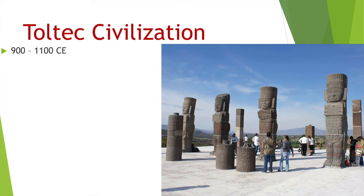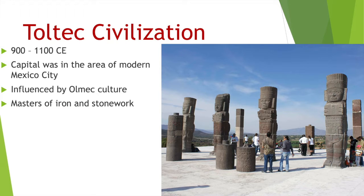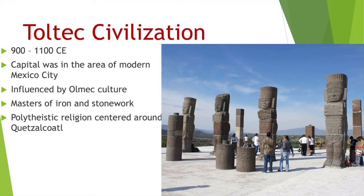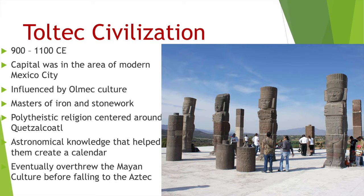Next up in the chronology of Mexican history is the Toltec civilization. Their capital was in modern-day Mexico City. They were influenced by the Olmec, as you can see with their stone heads. They were masters of iron and stone work and had a polytheistic religion centered around Quetzalcoatl. Polytheistic means more than one god — poly means more than one, and theistic refers to god or deity. They overthrew the Mayan culture and eventually fell victim to the Aztec.